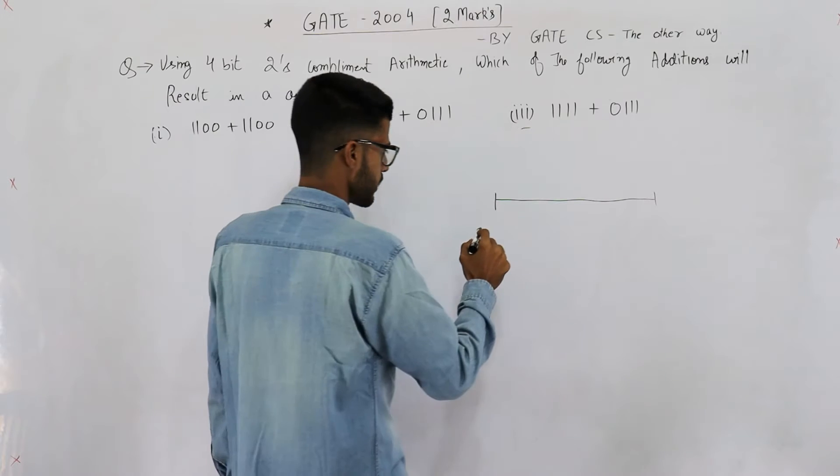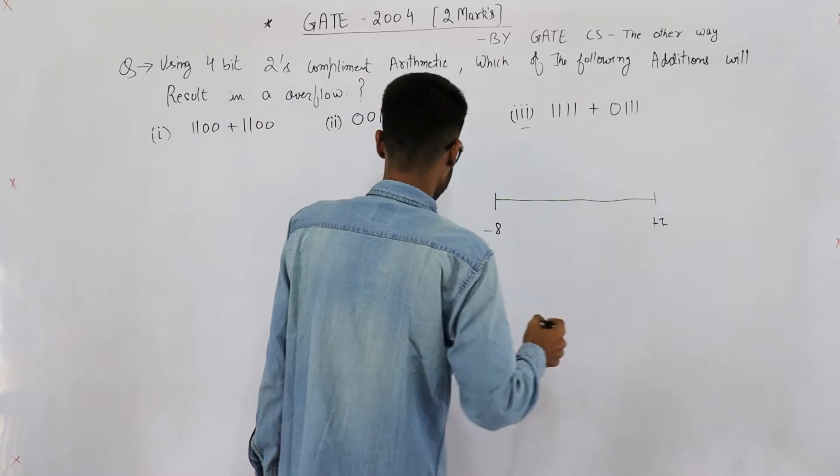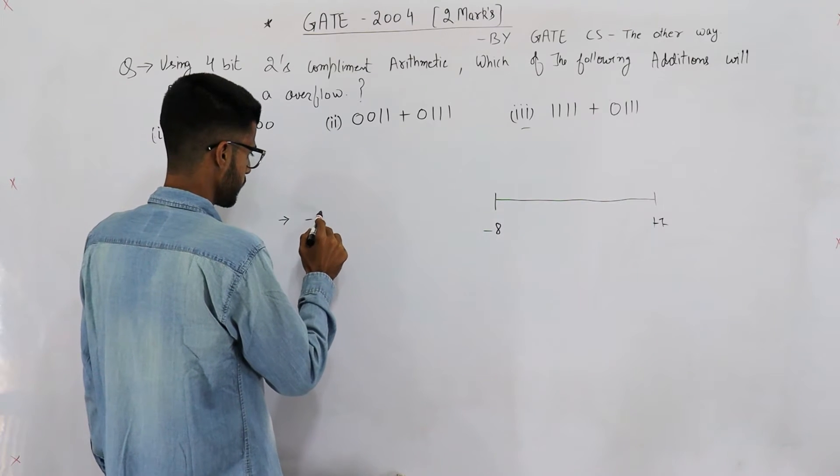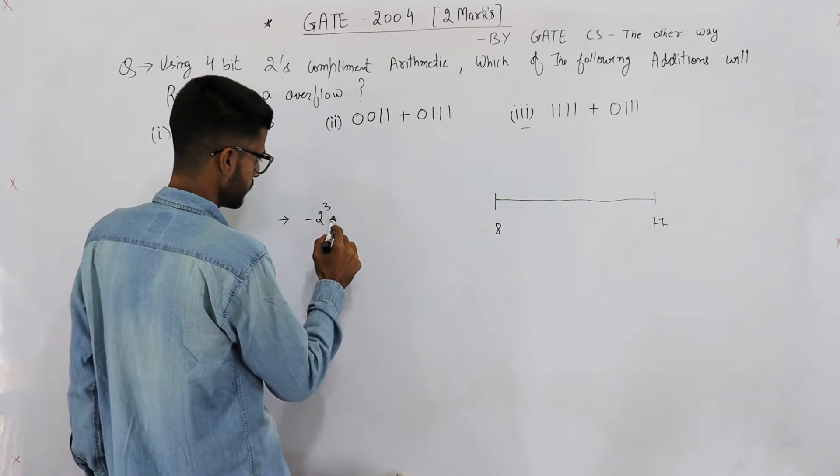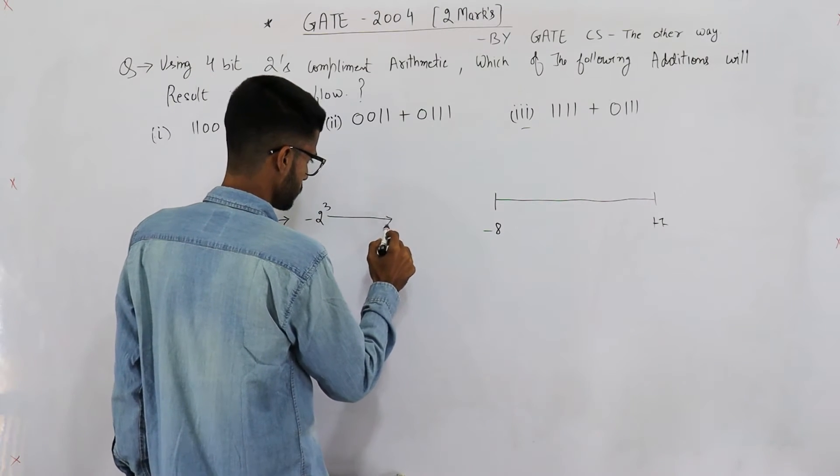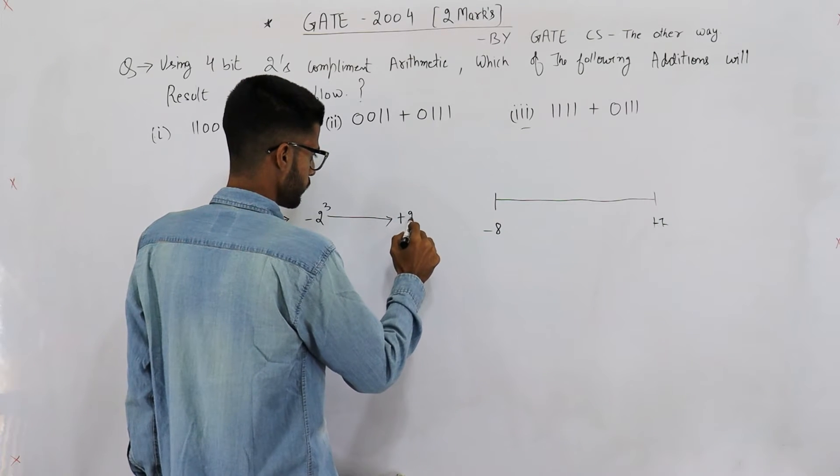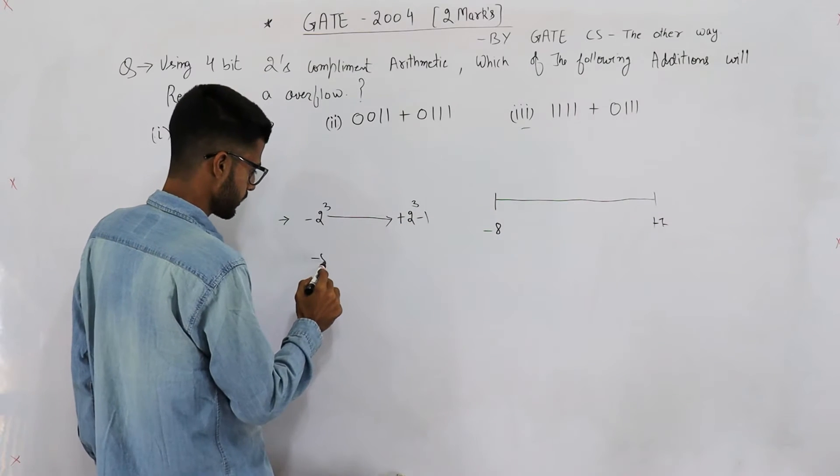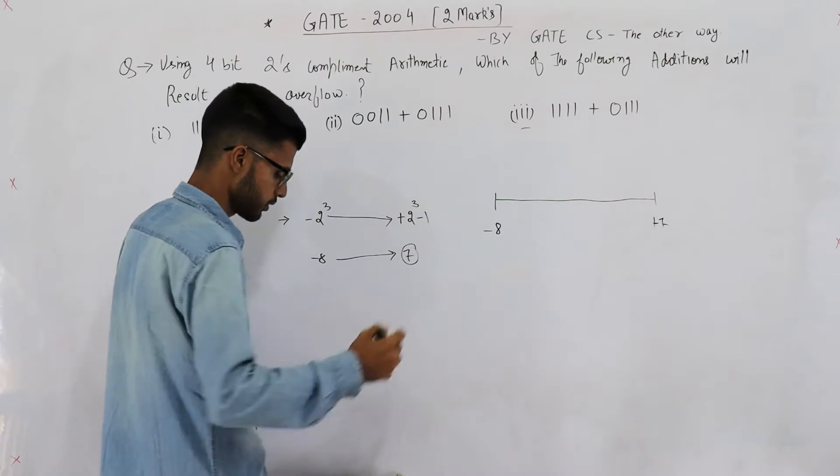This is a 4-bit 2's complement addition, and numbers that could be represented in 4 bits are from -8 to +7. The formula is -2^(n-1), where n is 4, which gives -8, up to positive 2^(n-1) - 1, which is +7. So this is the range.